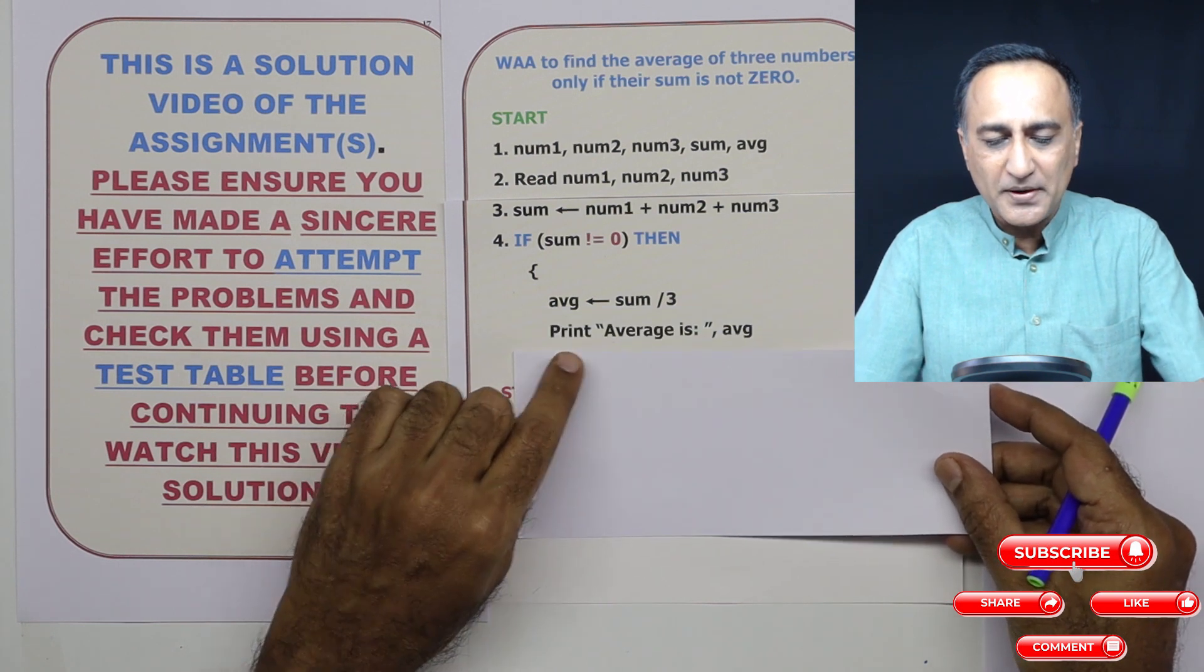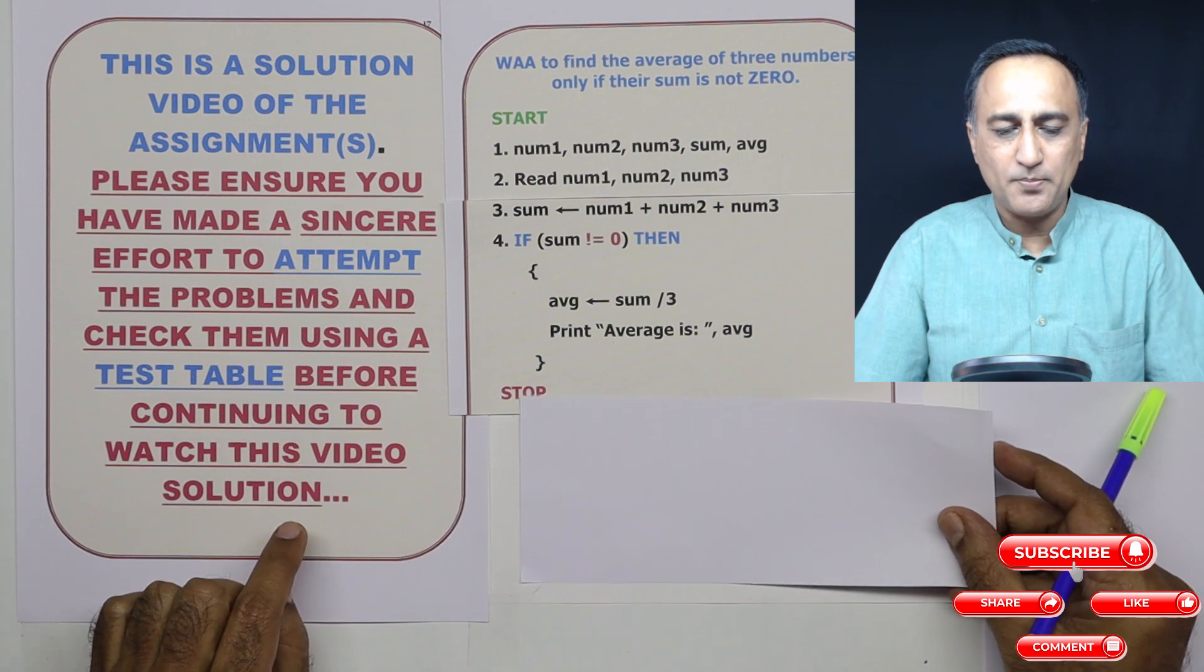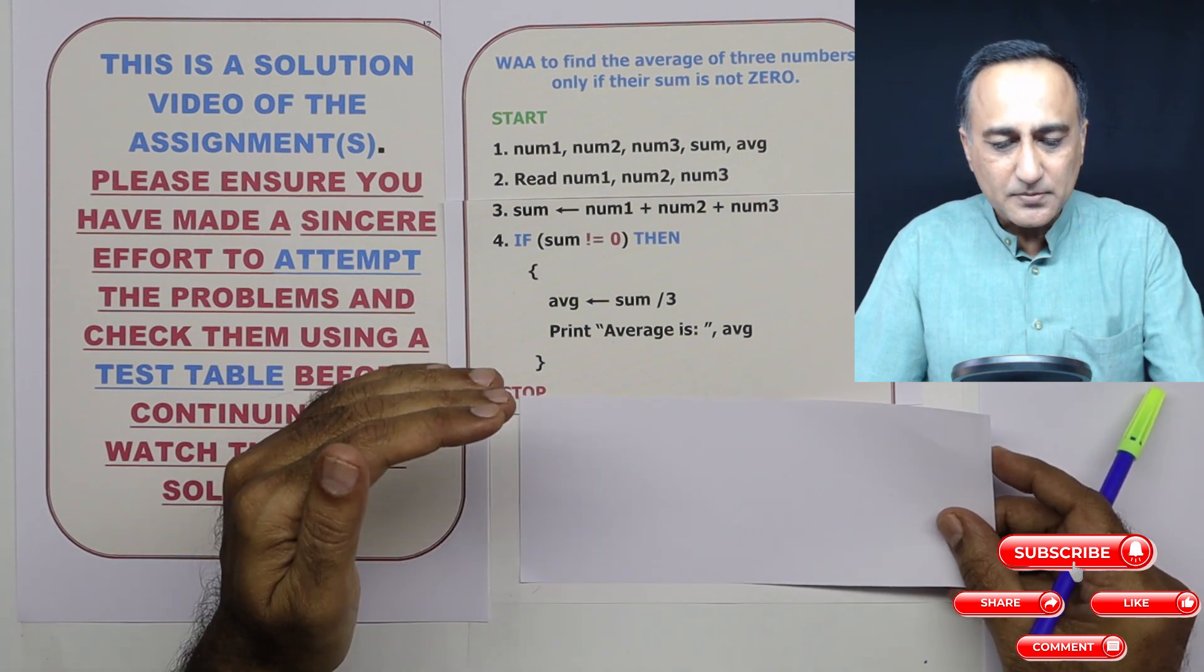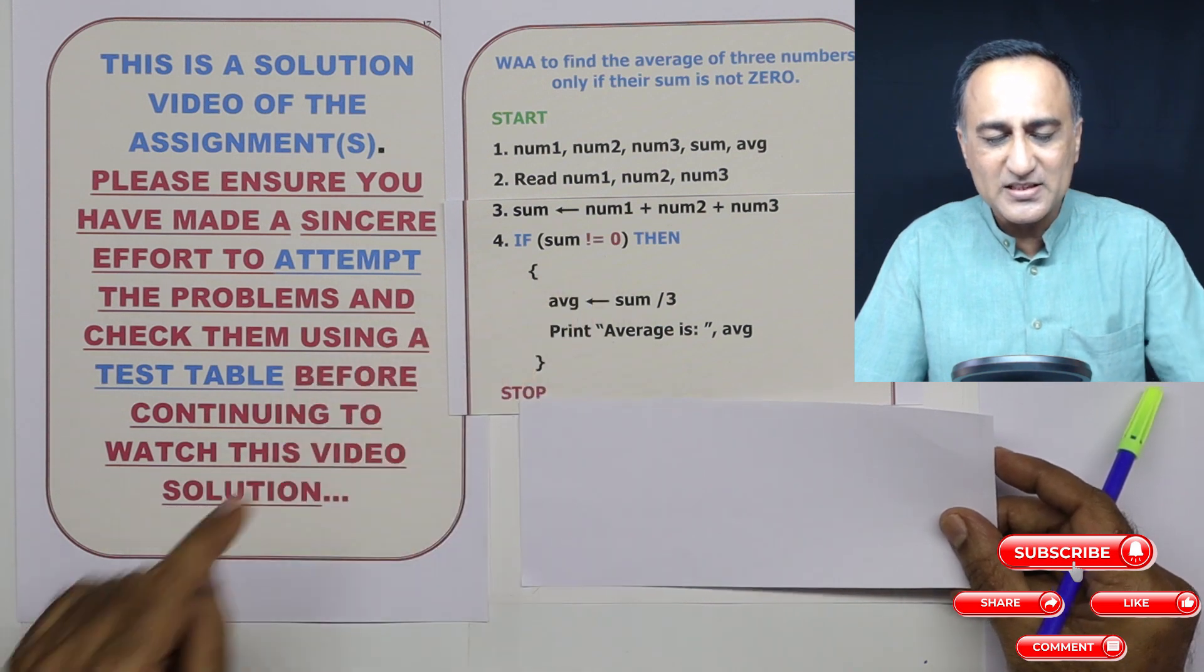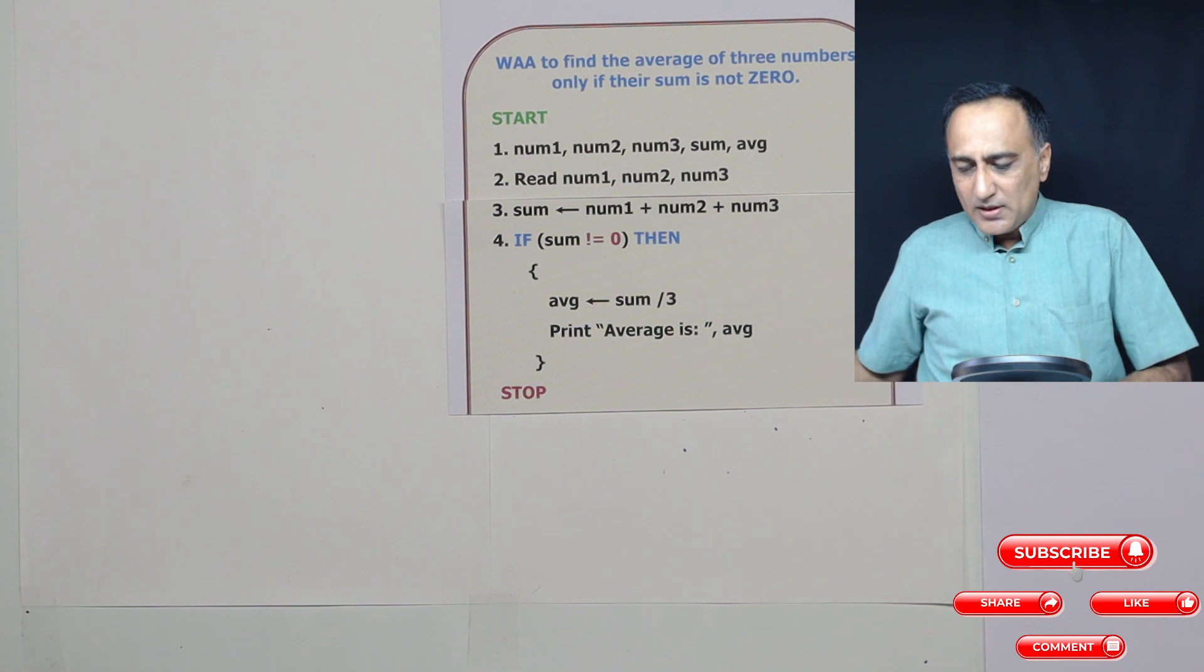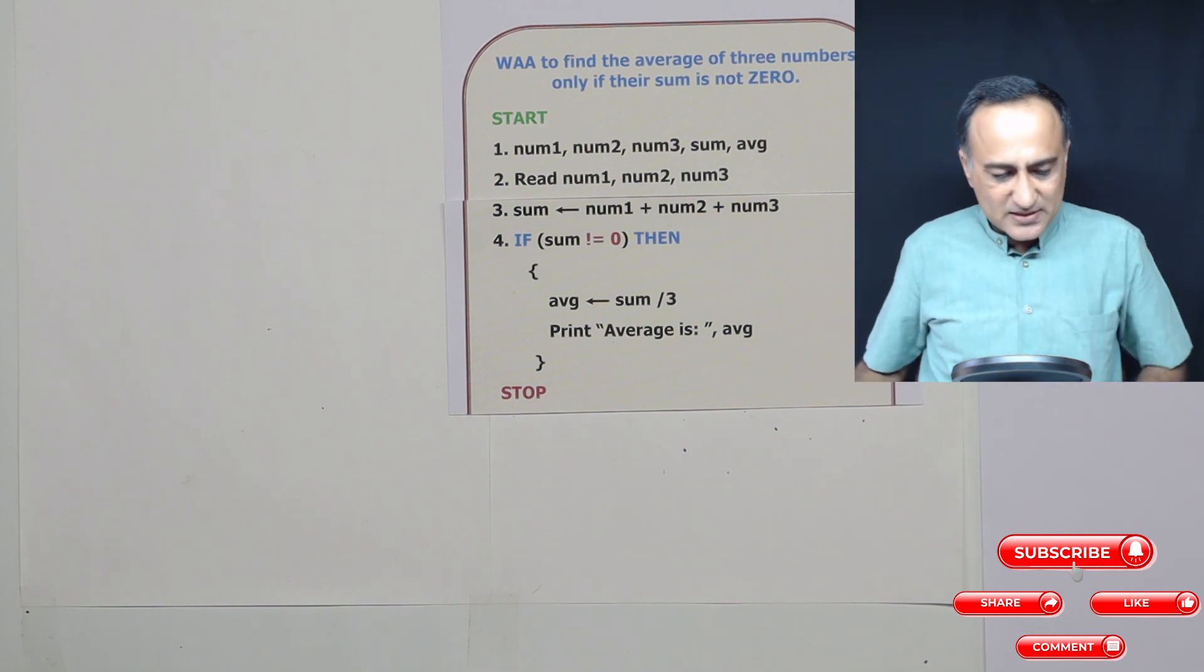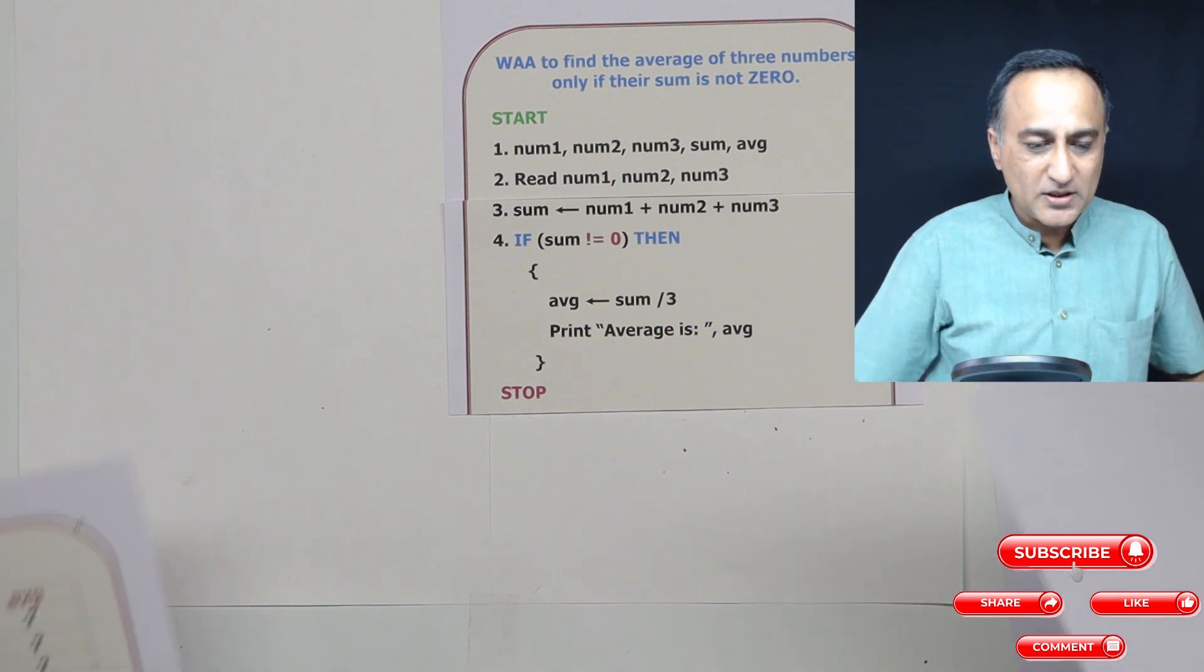And then I'm simply going to print average and then I'm going to come to stop. So this is how you go about finding the average only provided the sum is not zero. Now, as usual, as a good practice to understand how the logic works or whether the logic is correct, we shall run a test plan.